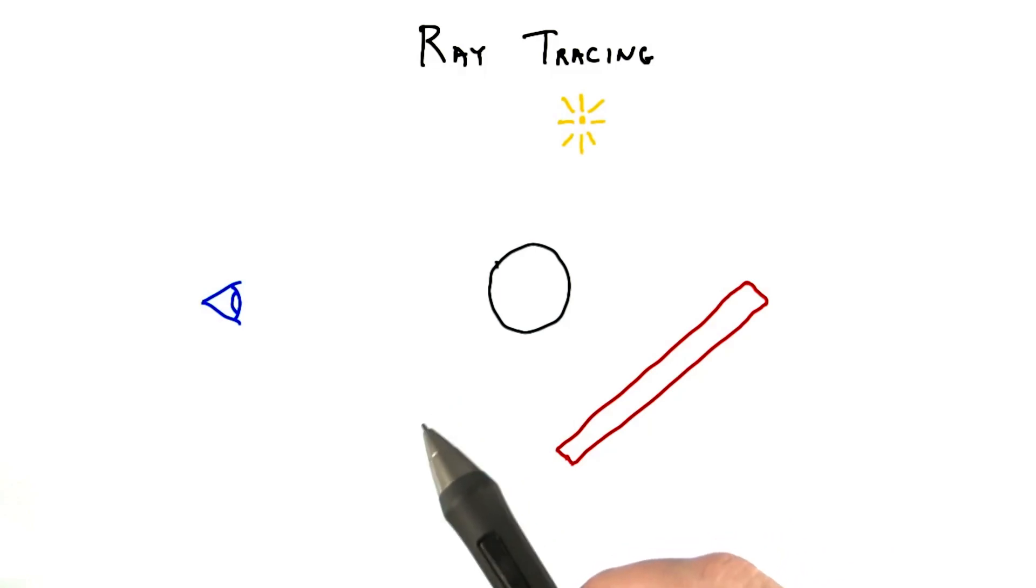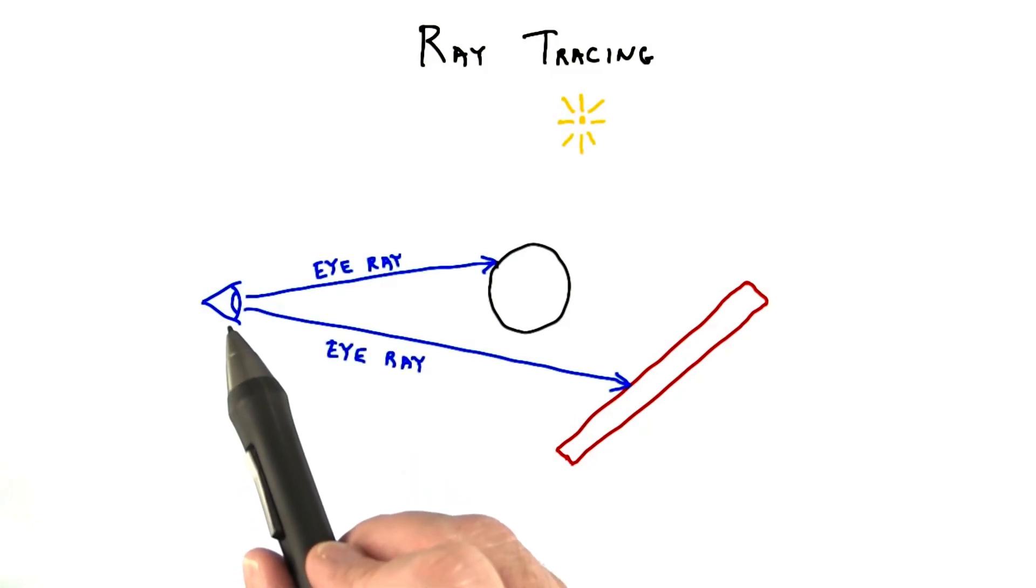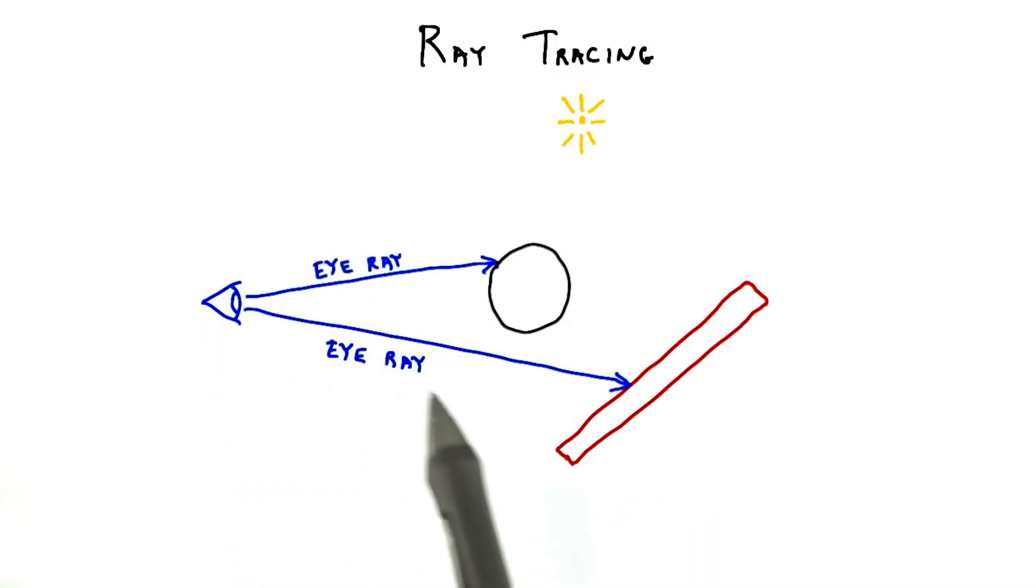There are many more light paths that can be tracked. One rendering technique that can simulate these is called ray tracing. We've seen how the GPU sends each object triangle in turn to the screen and rasterizes it. Ray tracing instead fires rays from the eye through each pixel.